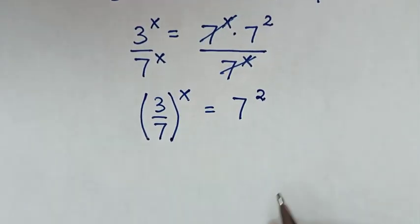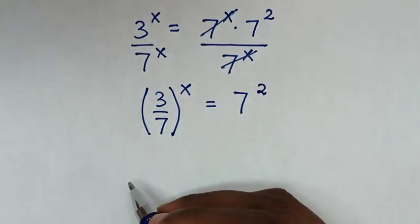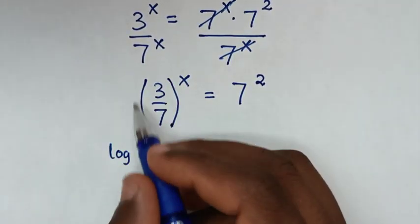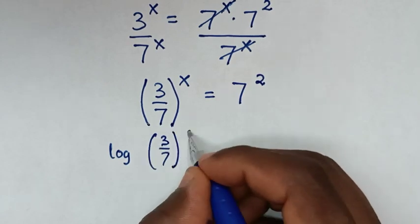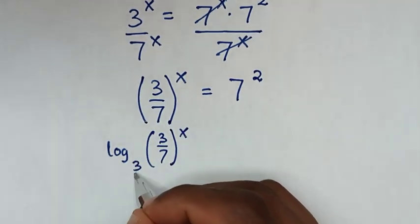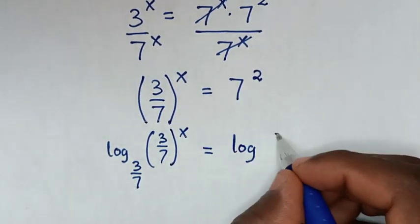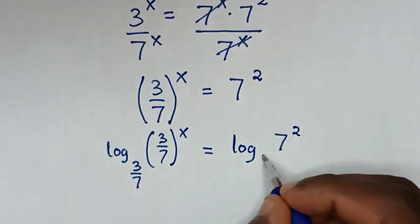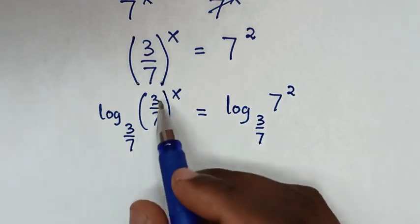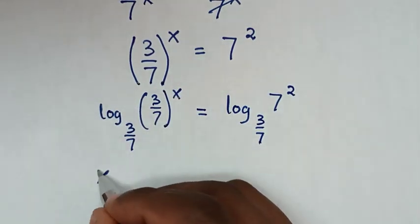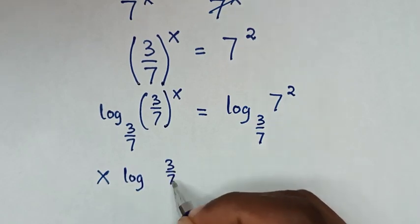In the next step, we apply log of base 3 over 7 on both sides, so it will be log base (3/7) of (3/7)^x is equal to log base (3/7) of 7 squared. Then the power of x will move to the front, so it will be x times log base (3/7) of (3/7).